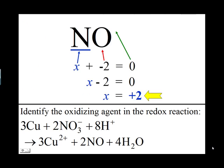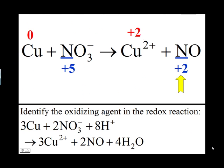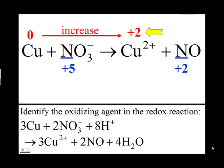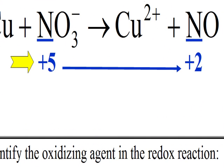Write positive 2 here underneath the equation. The oxidation number of copper has gone from 0 to plus 2, which is an increase. The oxidation number of nitrogen has gone from plus 5 to plus 2, which is a decrease.